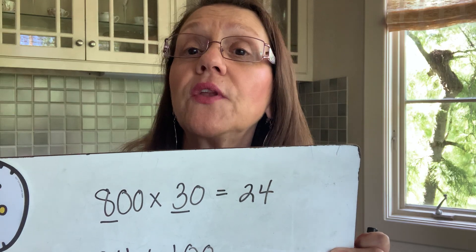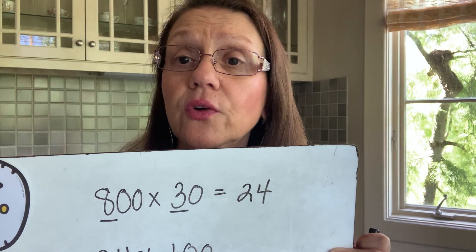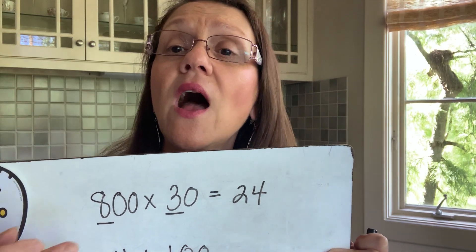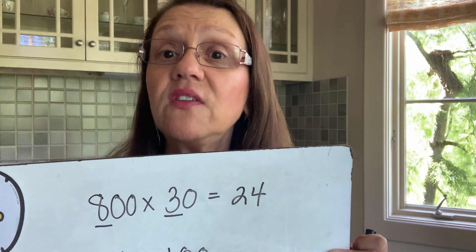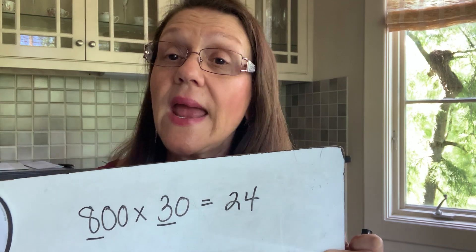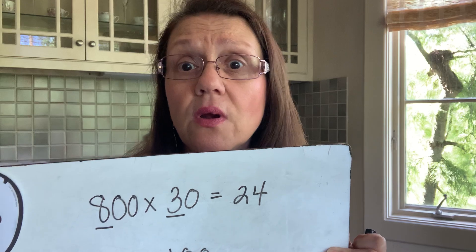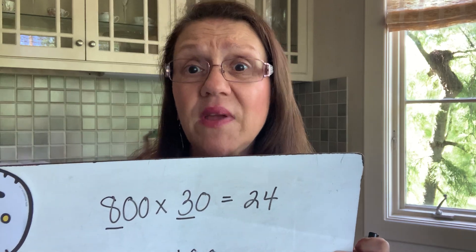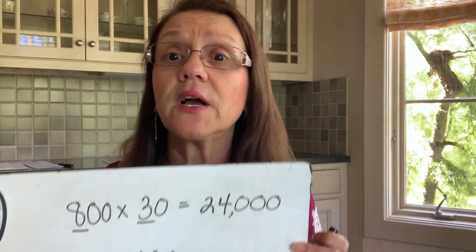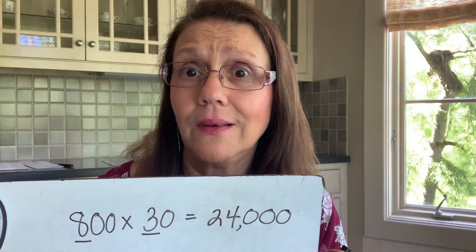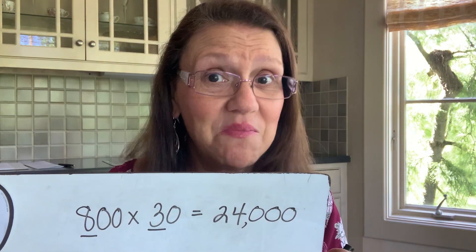The next thing you do is count the number of zeros you have in both factors. I have two zeros here and one zero here, for a total of three zeros, and I put my three zeros after the product of my basic fact. Add a comma if your number is large enough — which it is — and that is my product. That's it. Really, it's that simple.